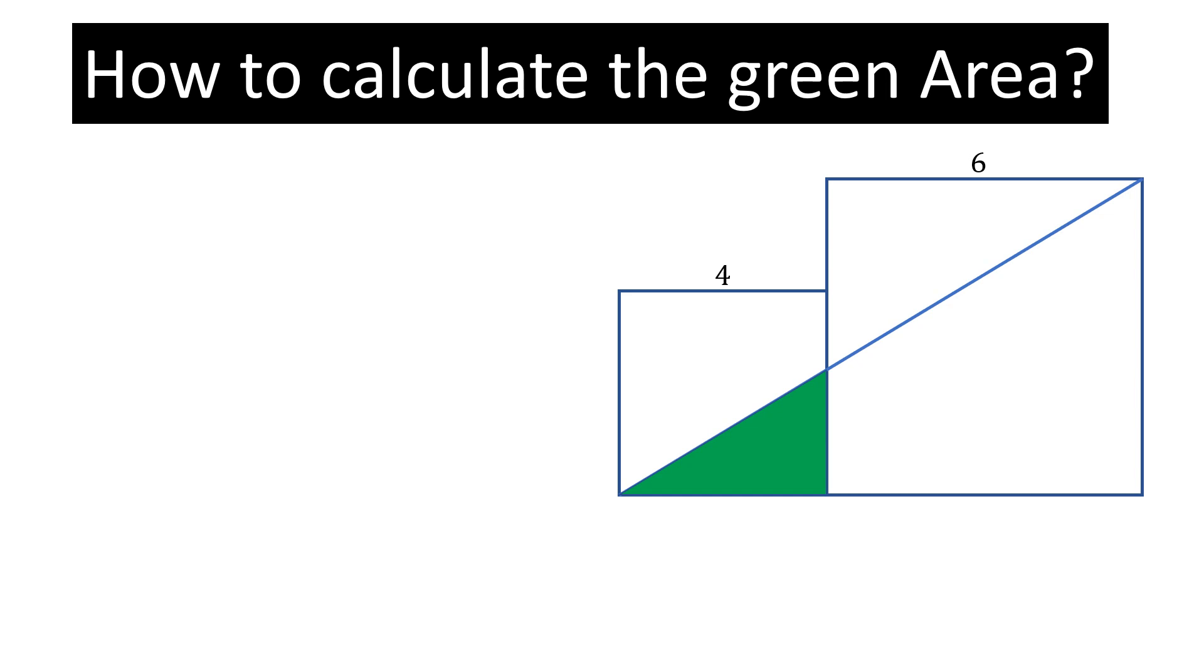In this question, there are two squares, one is this square and one is this square. And we need to calculate this green area.